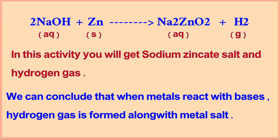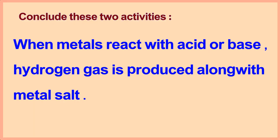The chemical equation is: 2NaOH + Zn → Na₂ZnO₂ + H₂. So let us conclude these two activities. When metals react with acid or base, hydrogen gas is produced along with metal salt.